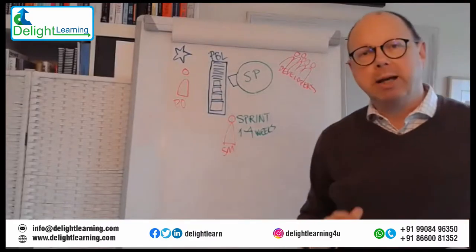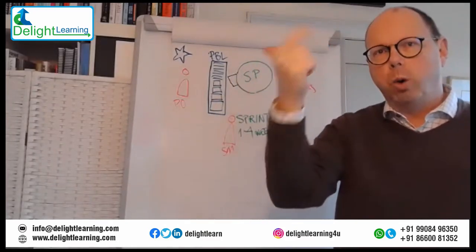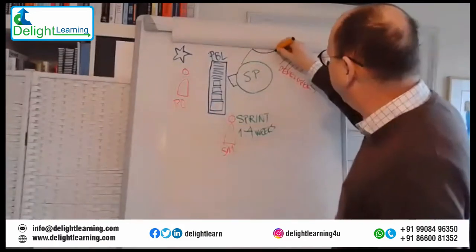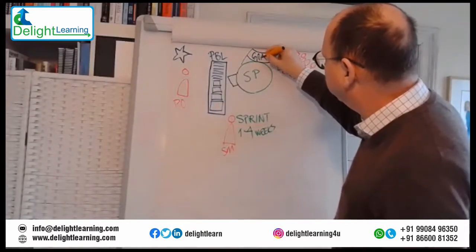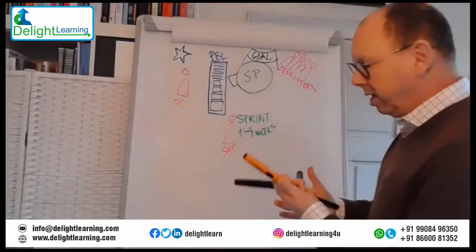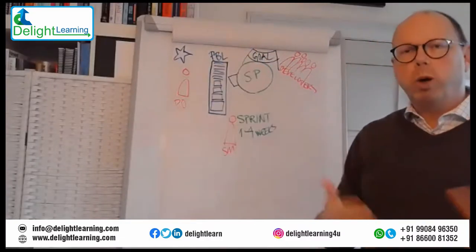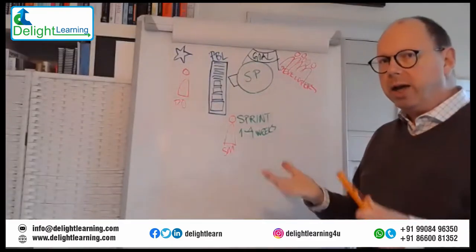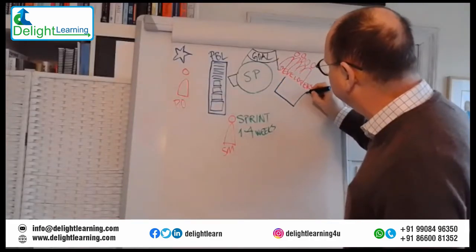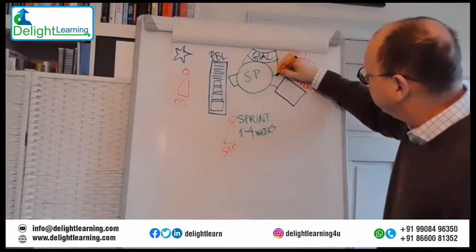During sprint planning, we want to focus on three things: why, what, and how. Why is to identify a sprint goal to guide us through the sprint. What is for the product owner to help the developers understand what are the items on top of the product backlog. And how is for the developers to decide how many of the items to bring into the sprint and what their plan is on how to implement that.